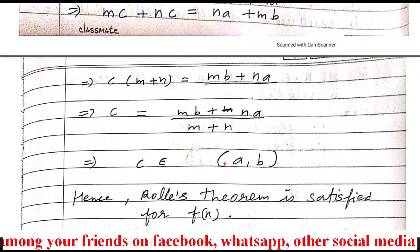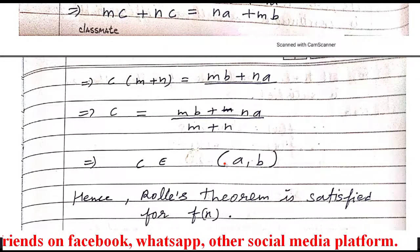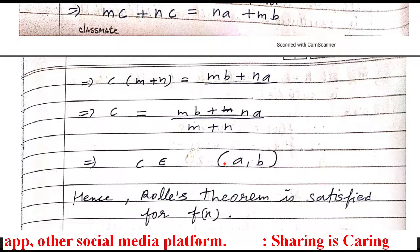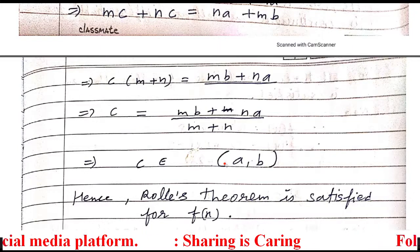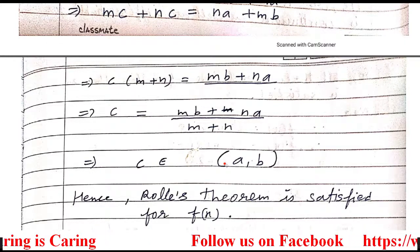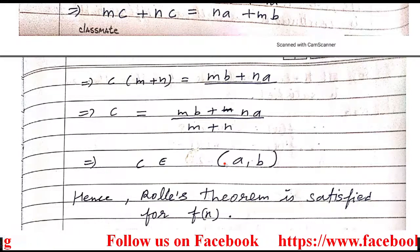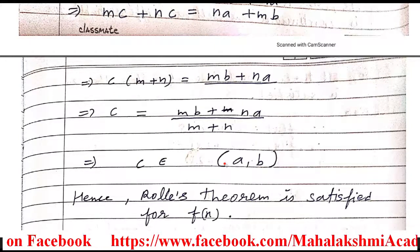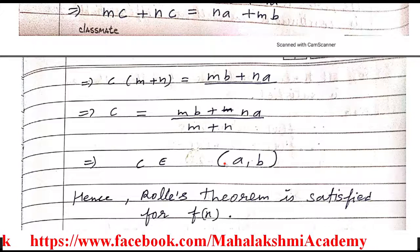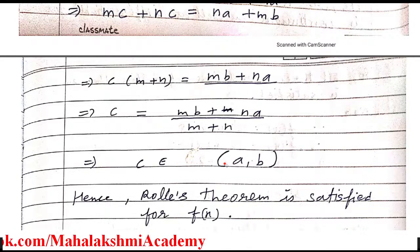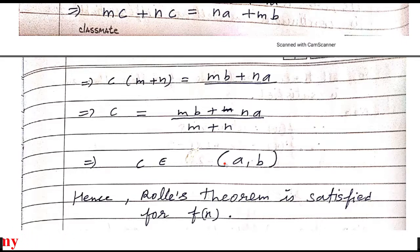Hence, question number 1, parts (a) and (b), are completed. I hope Rolle's theorem is clear to you. Rolle's theorem has mainly three conditions: the function should be continuous in the mentioned closed interval, the function should be differentiable in the open interval, and the function's value at the lower limit and at the upper limit should be equal. If any function satisfies these three conditions, then f'(c) = 0, and c belongs in the open interval mentioned in the question. Thank you.